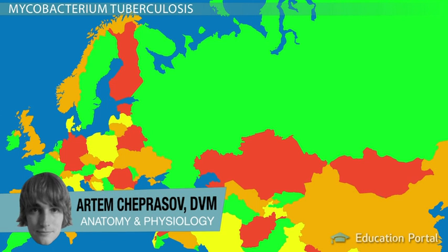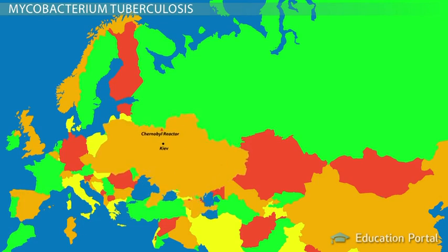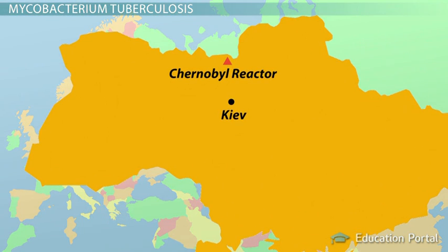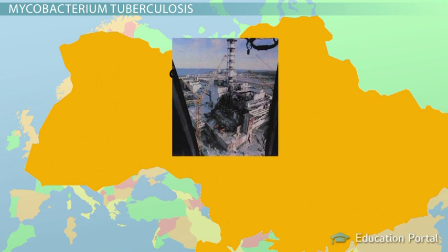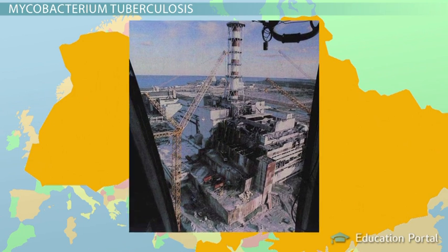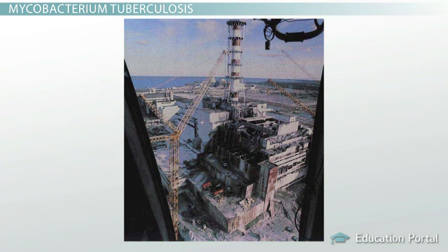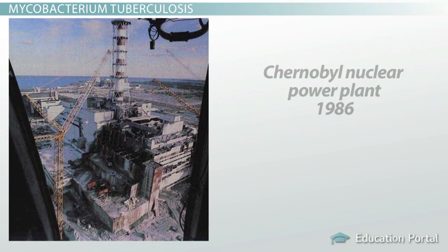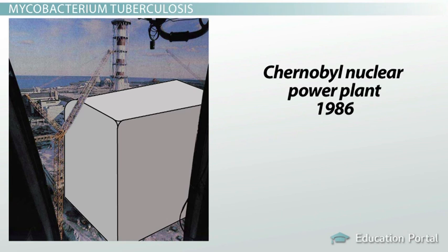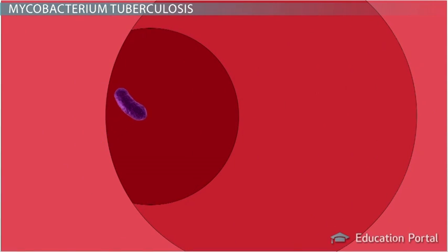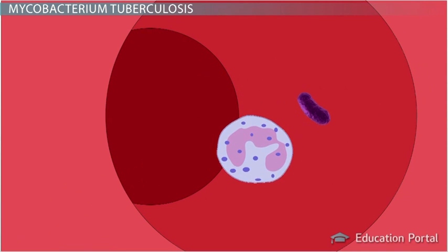In 1986, the worst nuclear disaster in world history occurred at the Chernobyl nuclear power plant in what is now the Ukraine. Dozens of people died as a direct result of this accident, and certainly thousands more were negatively affected for many years to come. In order to try and stem the flow of poisonous and radioactive material coming from the plant, a giant sarcophagus was built over the nuclear reactor. In a similar way, your body also builds sarcophagus-like structures to entomb dangerous things such as bacteria.